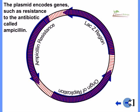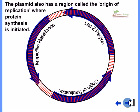The plasmid encodes genes such as resistance to the antibiotic called ampicillin. The plasmid also has a region called the origin of replication. This is the region where protein synthesis is initiated.